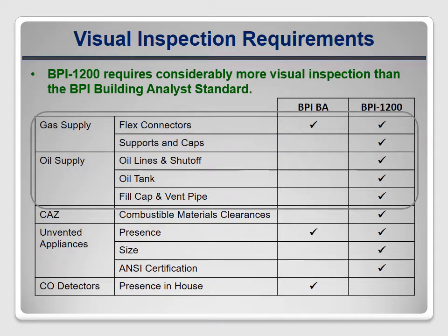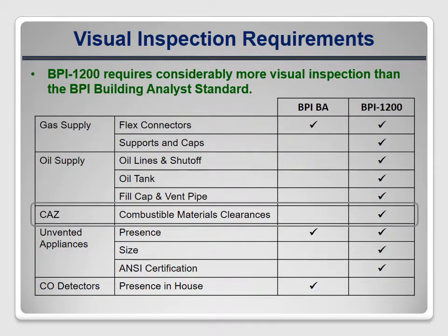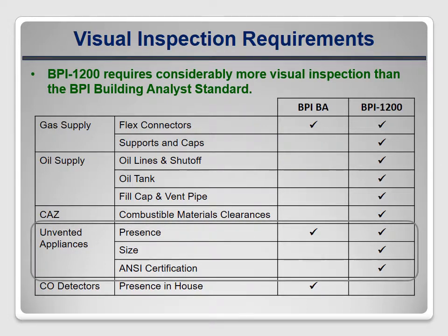BPI 1200 requires a detailed inspection of the entire fuel delivery system, while the BA Standard only mentions evaluating gas flex connectors. BPI 1200 clearly states how to inspect the combustion appliance zone for inadequate clearance to combustible materials, which is not mentioned in the BA Standard. BPI 1200 also requires a detailed evaluation of unvented appliances, including sizing and certification info from the data plate, whereas the BA Standard only requires that these appliances be identified and disabled prior to weatherization work.